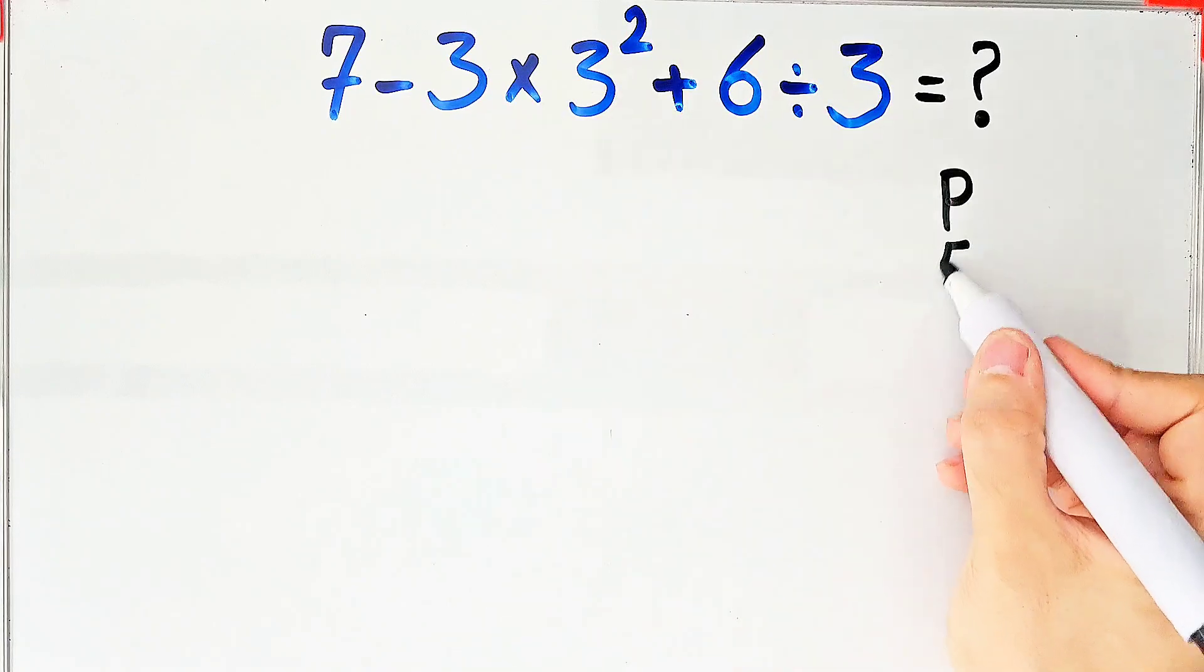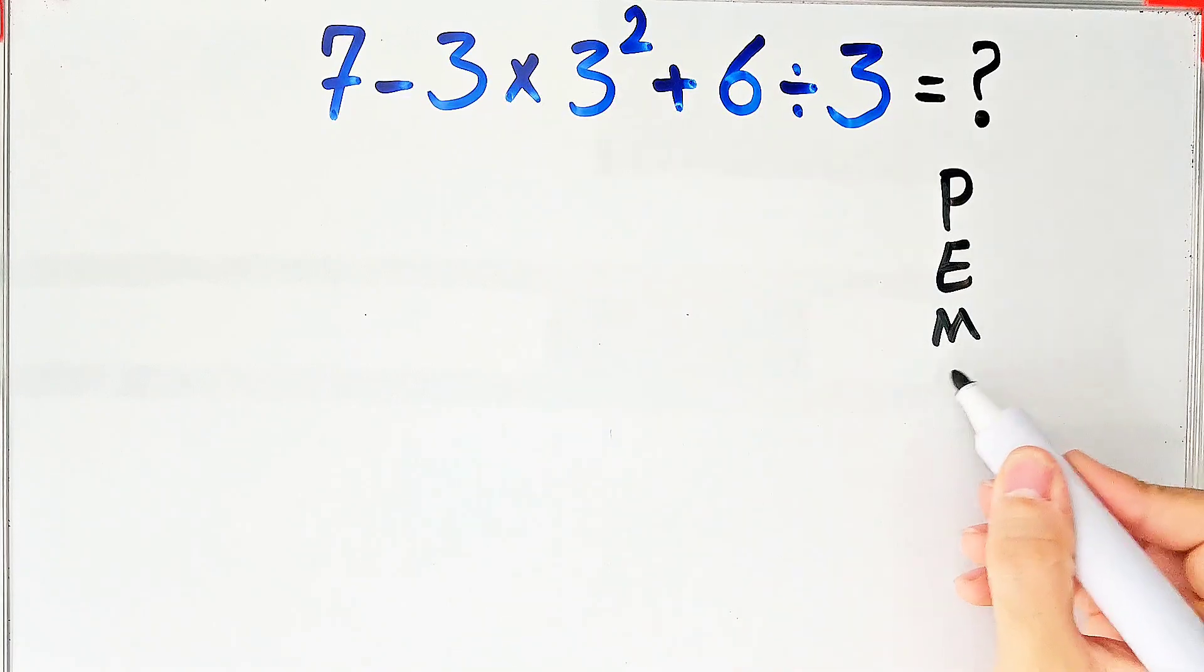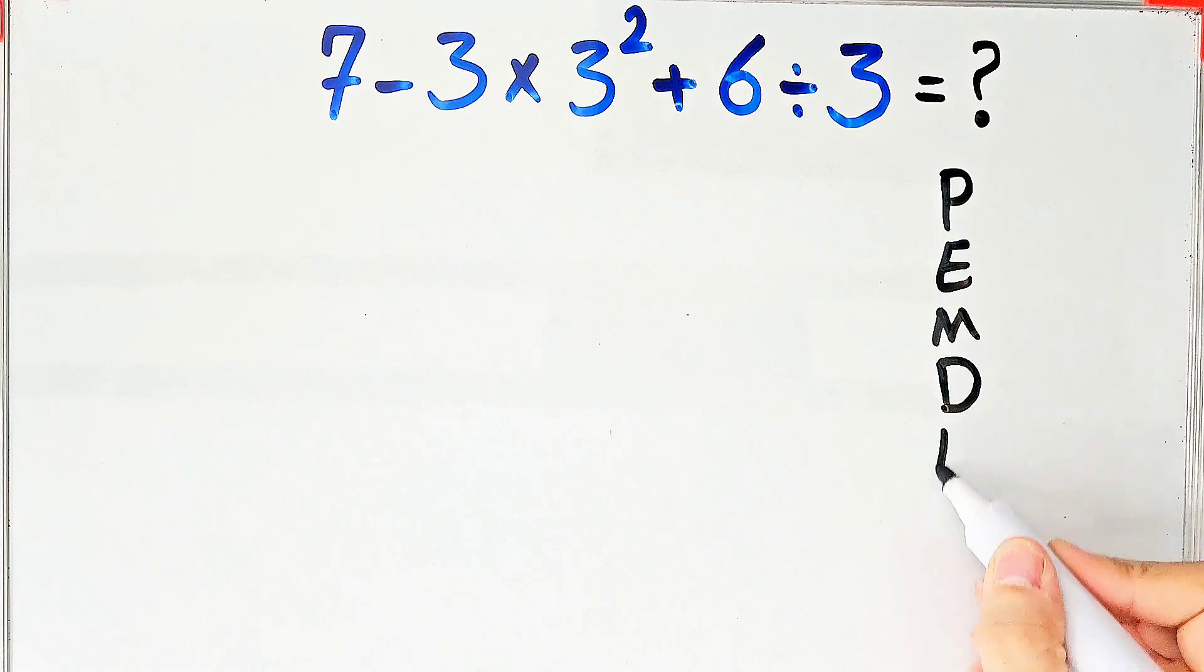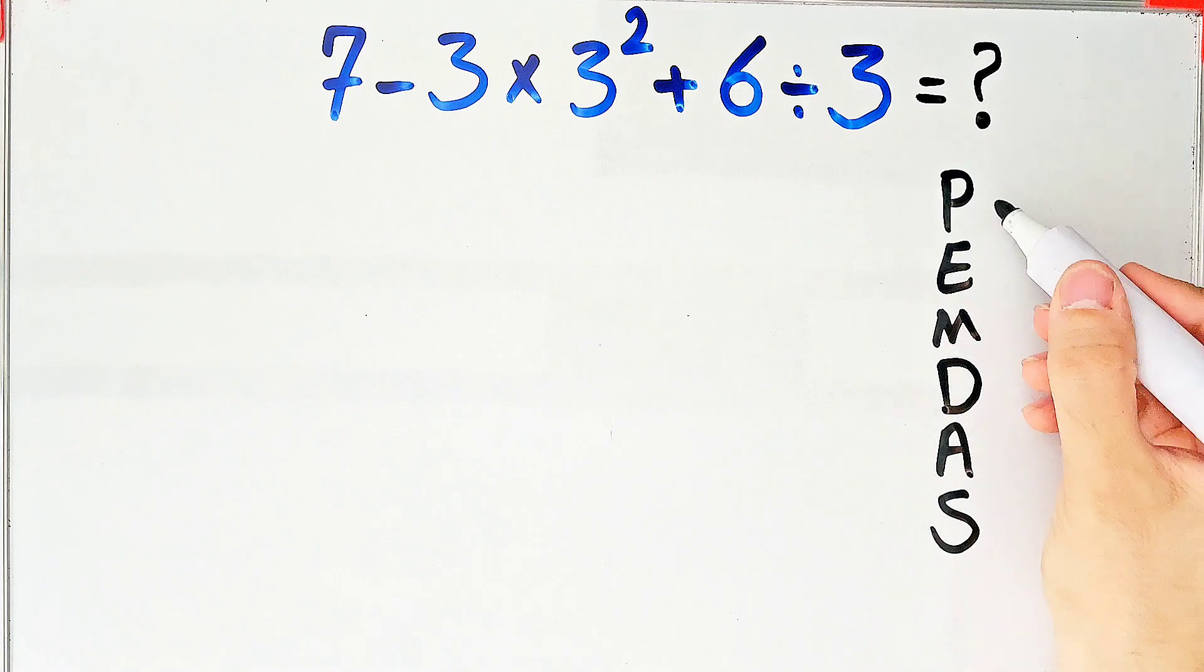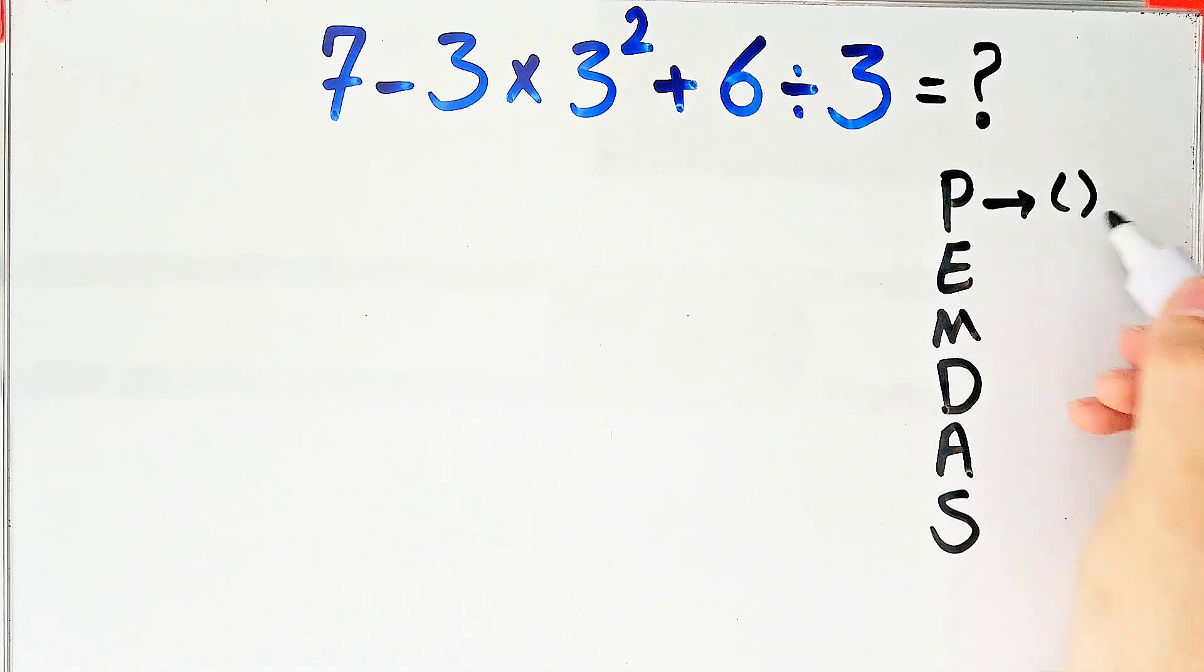We need to follow the order of operations, which is PEMDAS. PEMDAS shows the priority of mathematical operations, and if you don't pay attention to this rule you get the wrong answer. In this rule, P stands for parentheses, E stands for exponent.